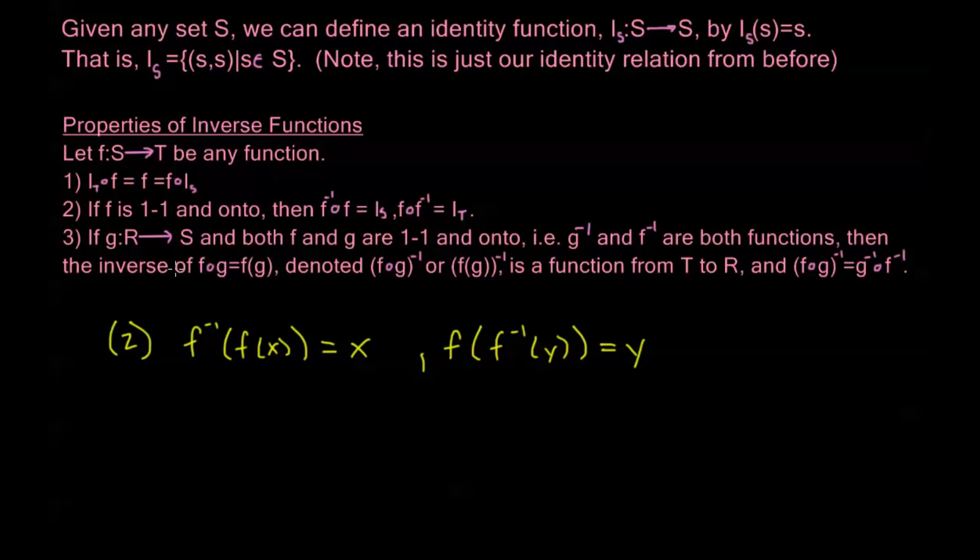Now the third one, if G is a function from R to S, and both F and G are one-to-one and onto, or in other words, their inverses are both functions, then the inverse of the composition, F composed with G, and we can write it in a couple of different ways.